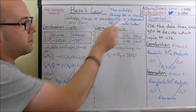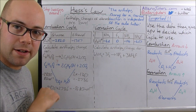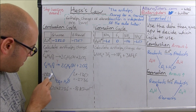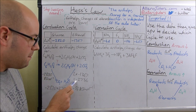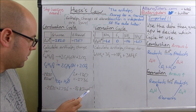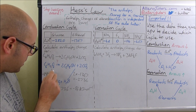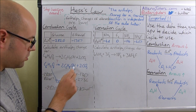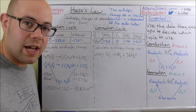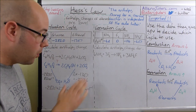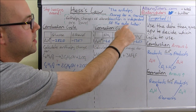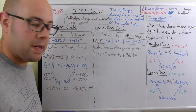Now remember when I said enthalpy change is independent of the route taken — we can check this is correct by going right around the cycle. This is minus 2820, this one is minus 2734, and this value is minus 86 kilojoules per mole. So starting from here: minus 2820 plus 2734, then going against that arrow gives plus 86 — and we should get zero. All the numbers in this cycle should add up to zero, proving it doesn't matter which way around we go.